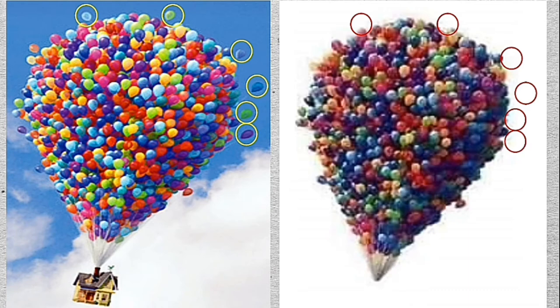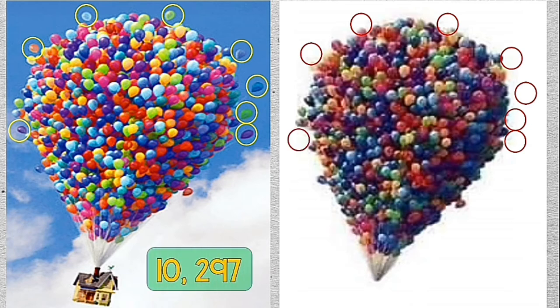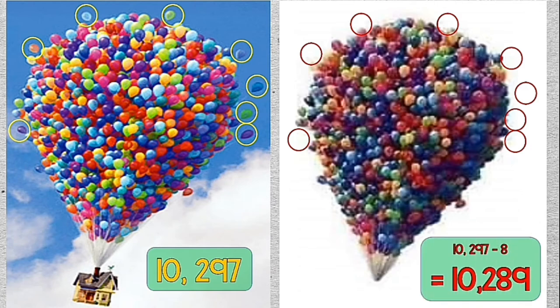Missing balloons could have been caused by the editing of the image. Since there are 8 missing balloons in the image used in the math challenge, we therefore subtract 8 from the original number, which will give us 10,289 balloons.